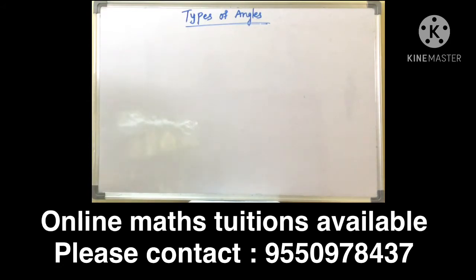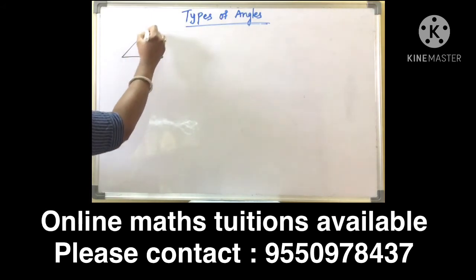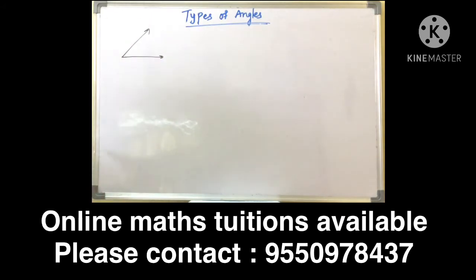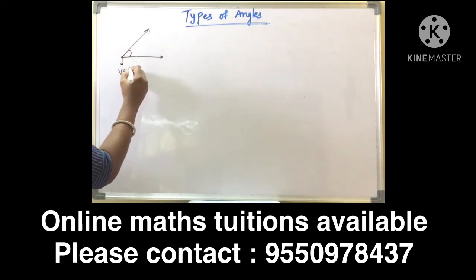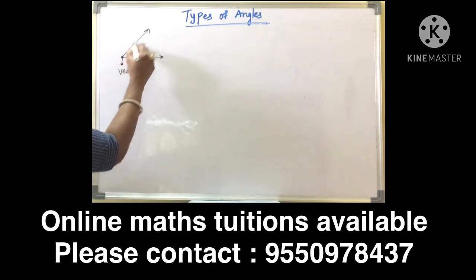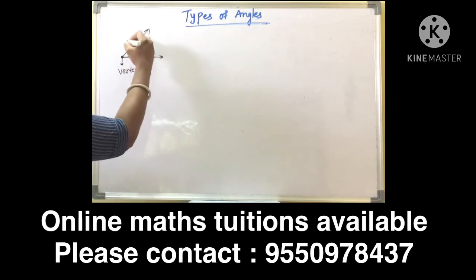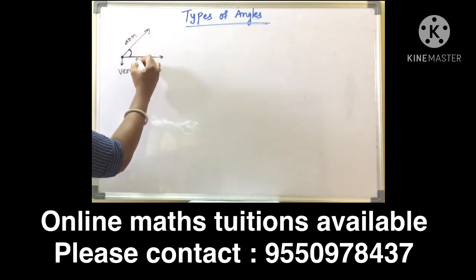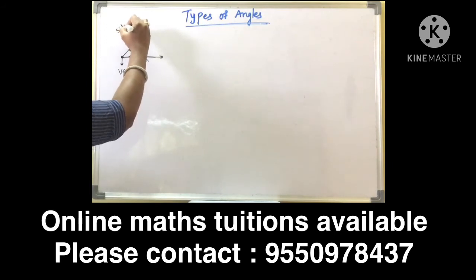We see angles around us all the time. An angle is formed between two rays or two line segments. The common end point of the two rays is called the vertex. These two rays are nothing but arms or sides.